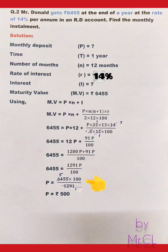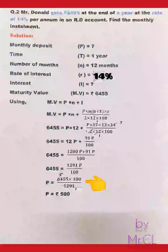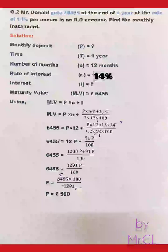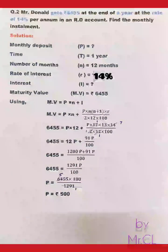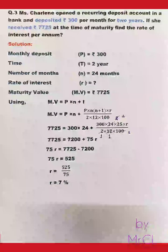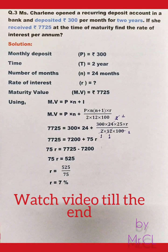So 6455 = 1291P ÷ 100, which gives P = 6455 × 100 ÷ 1291. Since 6455 ÷ 1291 = 5, we get P = 5 × 100 = ₹500 as the monthly installment.